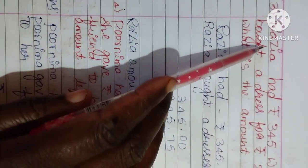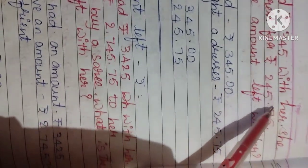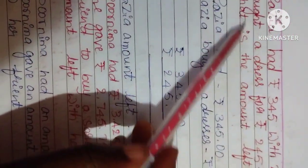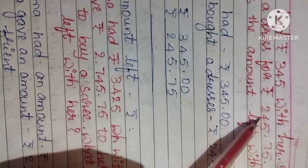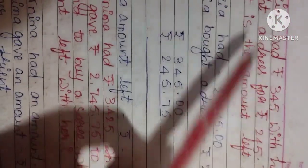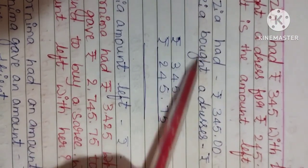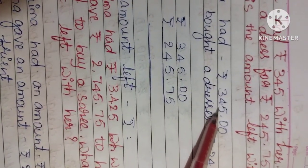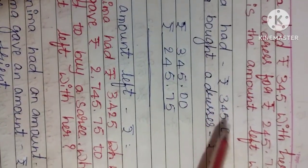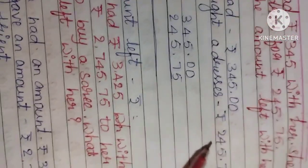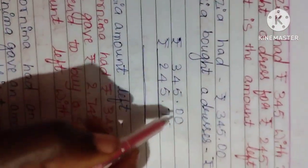See, Razia had Rupees 345 with her. She bought a dress for Rupees 245.75. What is the amount left with her? So Razia had 345 Rupees and she bought dresses 245.75. You can do now subtraction.